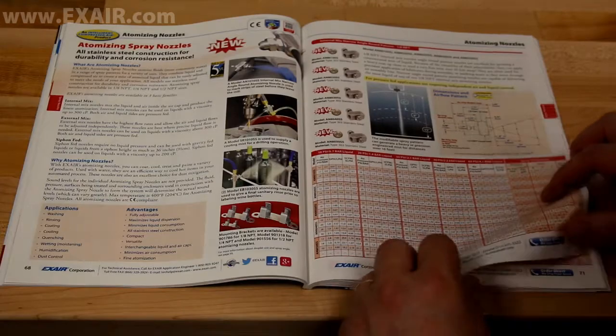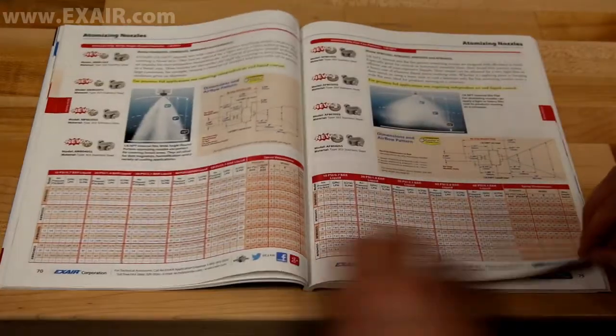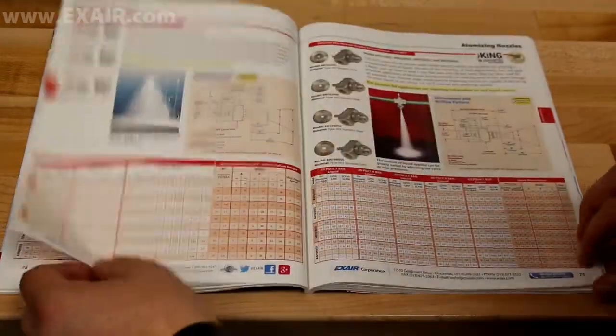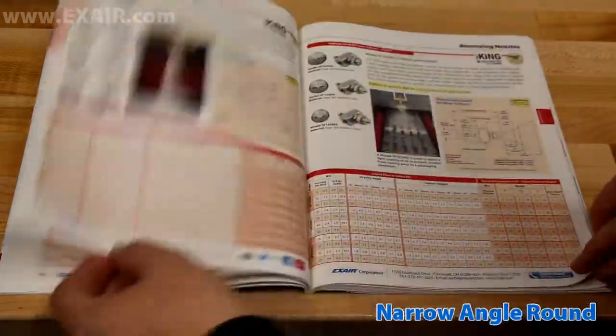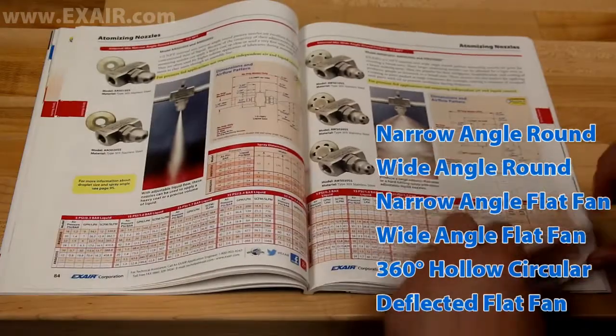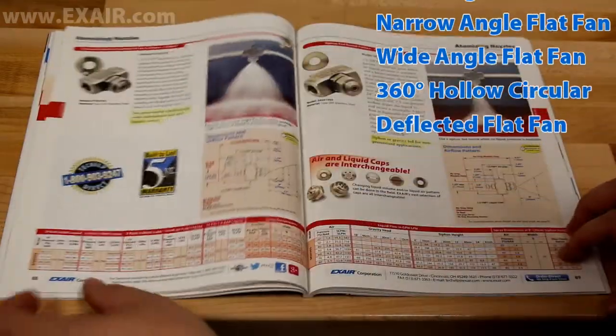If so, an X-Air Atomizing Spray Nozzle may be just the engineered solution you're looking for. There are over 100 models available, all constructed of durable, corrosion-resistant stainless steel in three sizes for a variety of patterns ranging from a tenth of a gallon to over 300 gallons per hour.